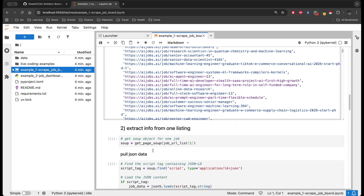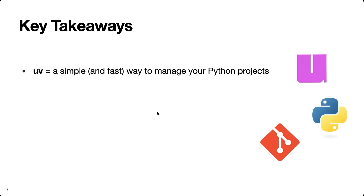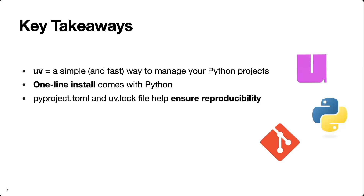We talked about a lot, so let me conclude with a few key takeaways. First, uv is a simple and fast way to manage your Python projects — it's much faster than pip and can often perform the same functionality with less code. It was a one-line install, and when you install uv it also comes with Python. Additionally, uv replaces many other command-line tools like Poetry and pyenv. We saw how pyproject.toml and uv.lock help ensure reproducibility — pyproject.toml is for sharing, while uv.lock is specific to your machine.